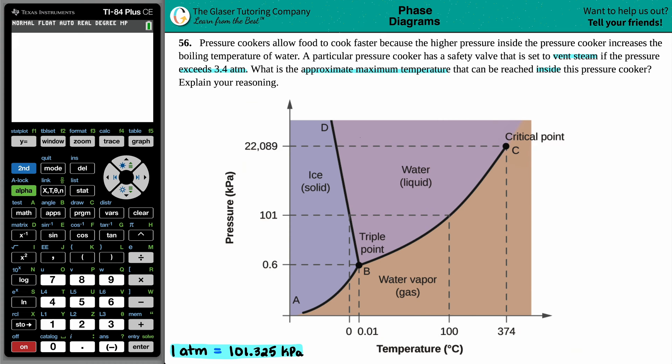Now in this question, they did state that a particular pressure cooker has a safety valve that's set to vent steam. Now what is steam? Well, it's water in what form? Ah, it's water in the gas form.